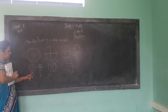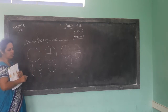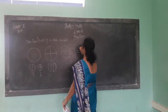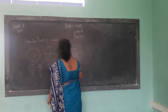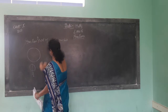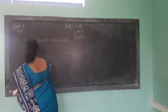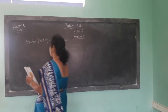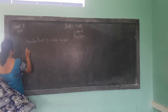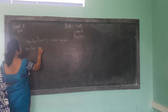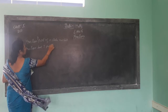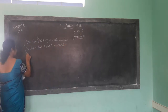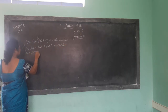Fraction has two parts: numerator and denominator. The upper number is called the numerator. The down number is called the denominator. Fraction has two parts — that is numerator and denominator.